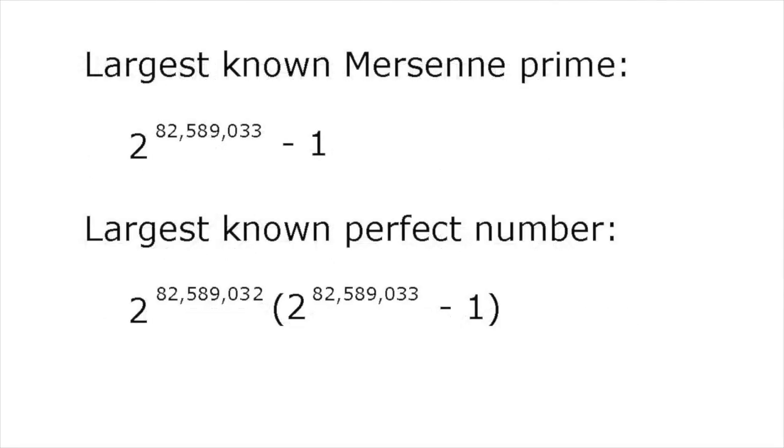All even perfect numbers end in 6 or 8 and have a corresponding Mersenne prime. There are no known odd perfect numbers, so up to the present, there's a one-to-one correspondence between known Mersenne primes and known perfect numbers. The largest known perfect number is that corresponding with the largest known Mersenne prime.